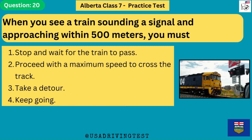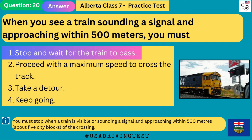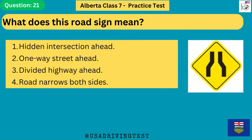When you see a train sounding a signal and approaching within 500 meters, you must: 1. Stop and wait for the train to pass. 2. Proceed with maximum speed to cross the track. 3. Take a detour. 4. Keep going. The answer is 1: stop and wait for the train to pass. You must stop when a train is visible or sounding a signal and approaching within 500 meters — about 5 city blocks — of the crossing.